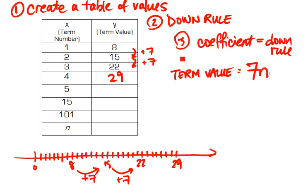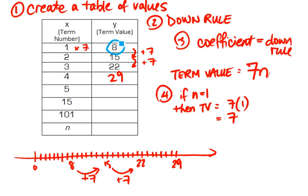So I have to see how much it goes up each time. Now if I try this for the first value, 1 times 7, I can see for the first value, if n equals 1, then term value is 7 times 1 equals 7. But that doesn't match my answer. My answer is 8. So I have to try to come up with a fix.